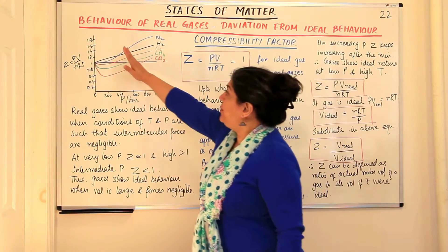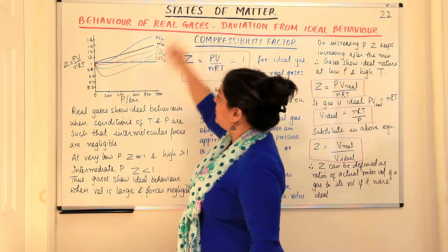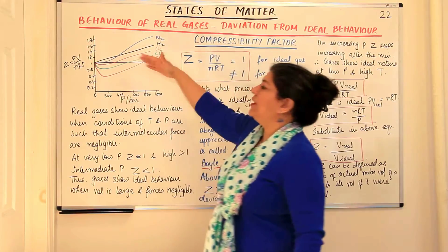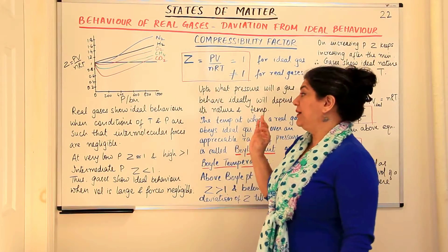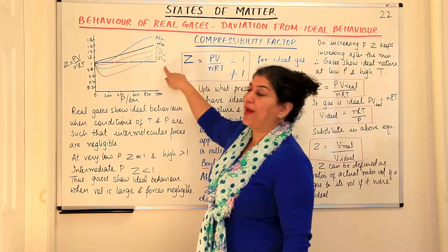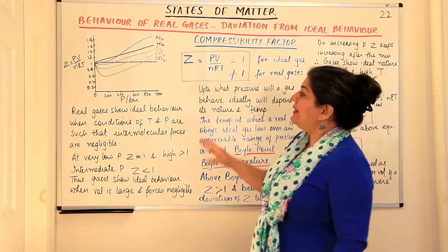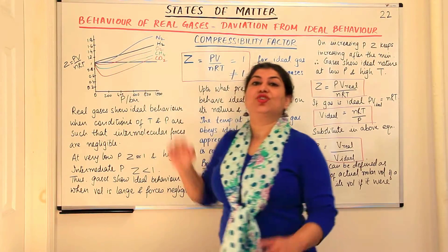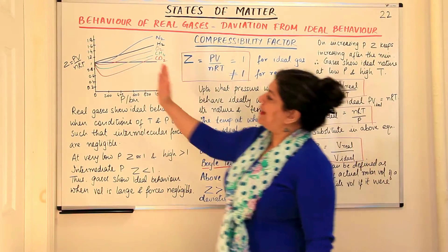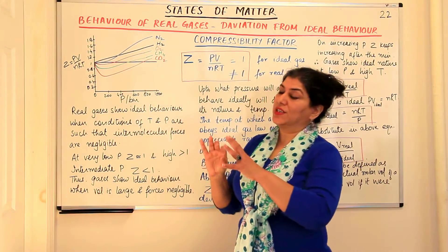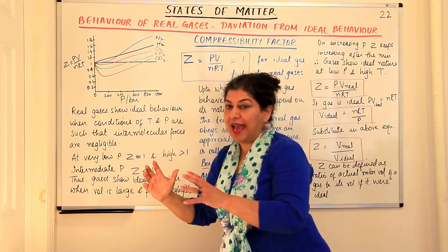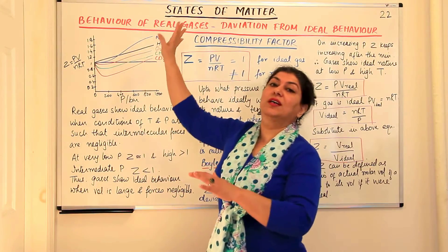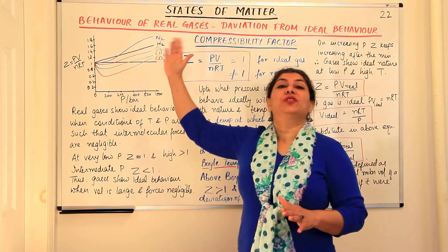At high pressures — around 800 bar — all gases show positive deviation from the ideal gas compressibility factor value. At intermediate pressures, these gases show negative deviation. So at almost zero pressure they behave ideally, then they start dipping and reach a minimum, then start increasing, and at very high pressures they cross the ideal gas line and show positive deviation.